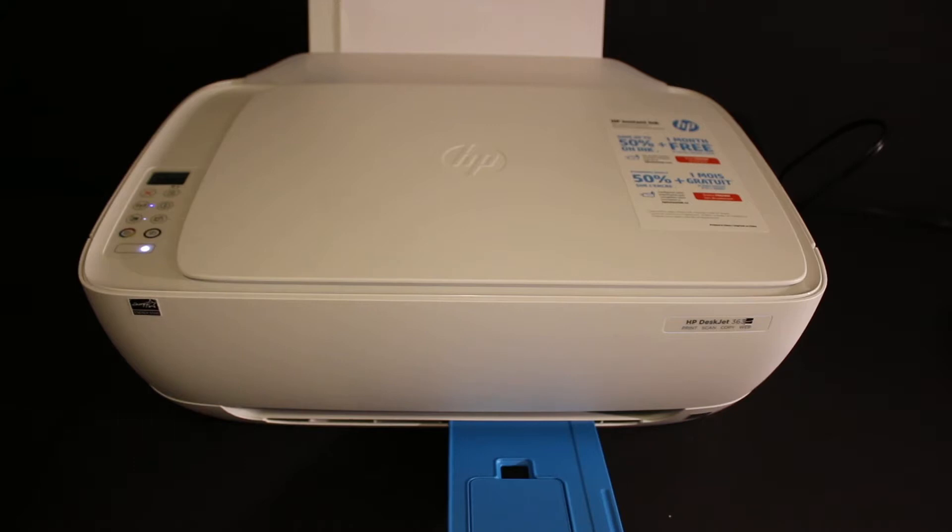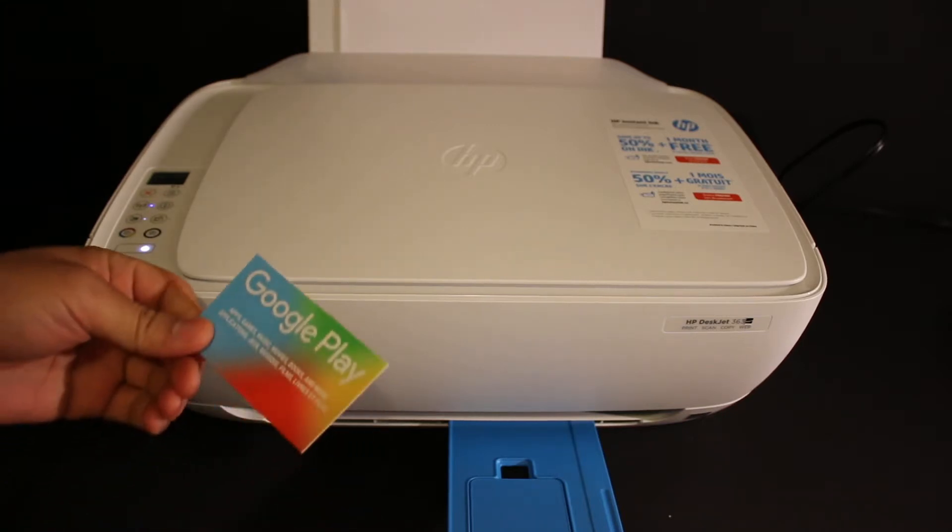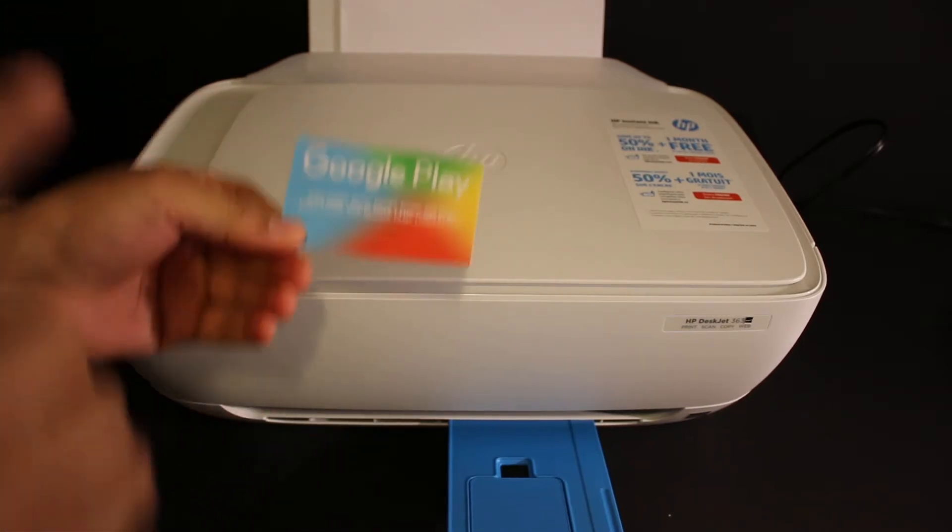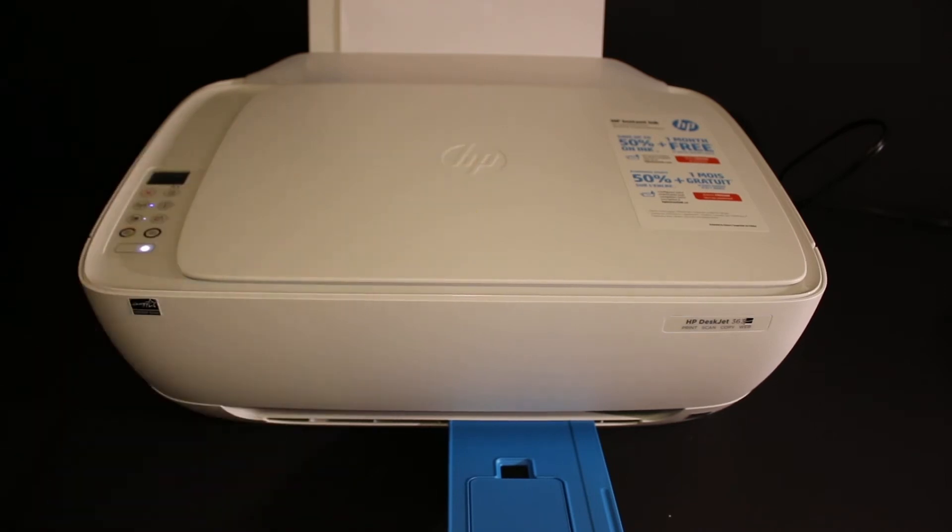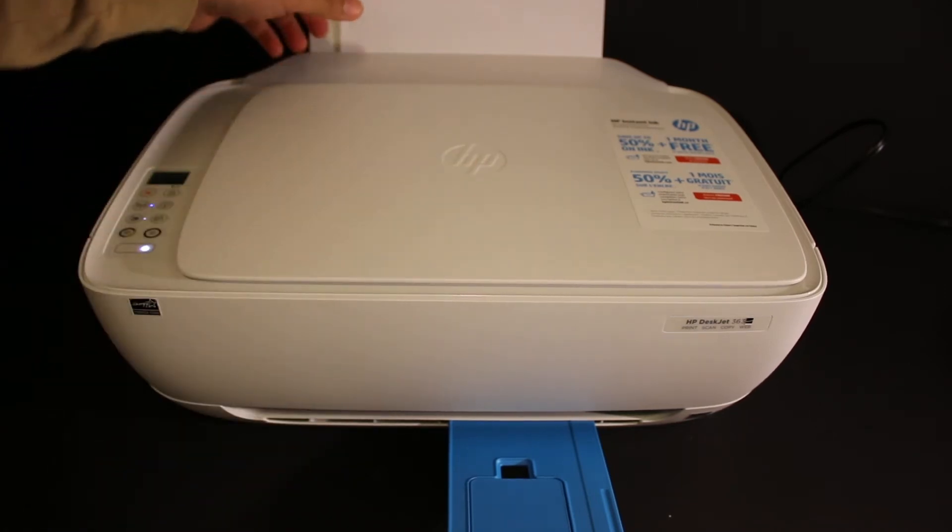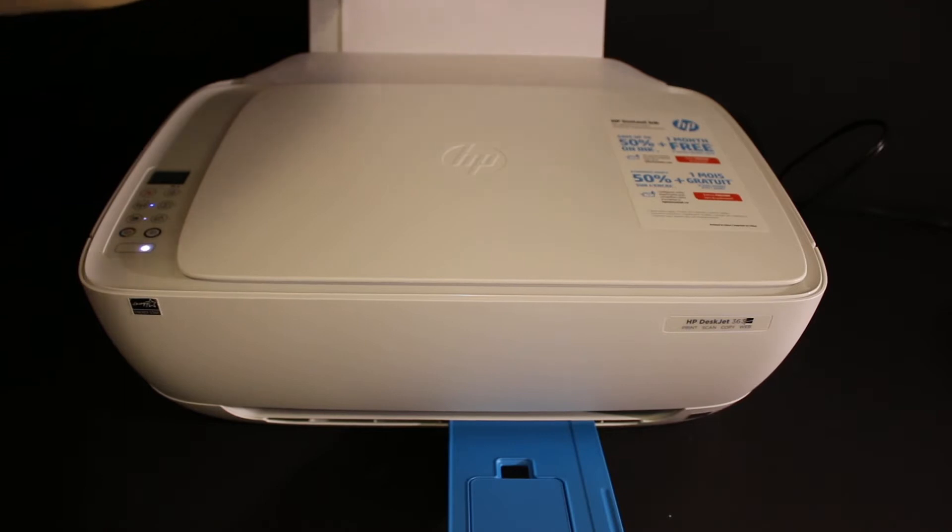Today's video is regarding HP printer. I'm going to show you how to copy the ID both sides on a single side of a page. Let's start with that. First thing is to load the A4 size sheets in your HP printer.